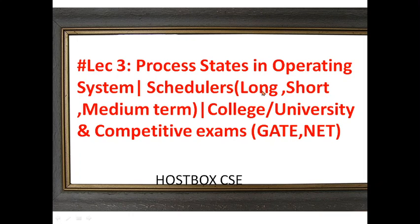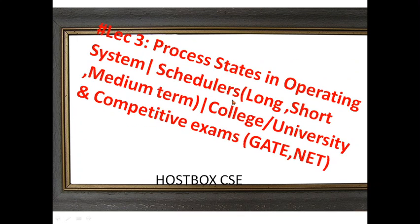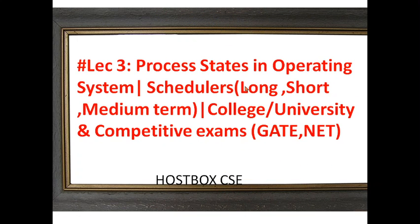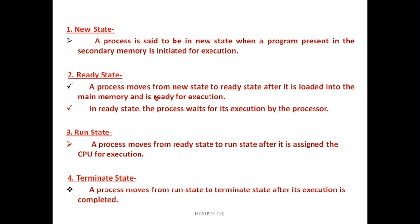Let's cover today's session. Whenever a process runs, any operating system follows these states: new state, ready state, run state, and terminate state. The process is in new state when a program in secondary memory is initiated for execution. The ready state means a process moves from new state to ready state after it is loaded into main memory and is ready for execution. The run state means a process moves from ready state to run state after it is assigned to the CPU.